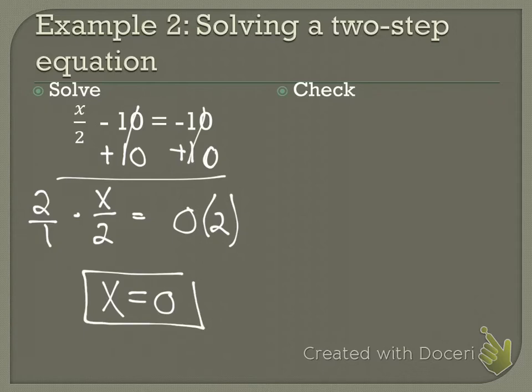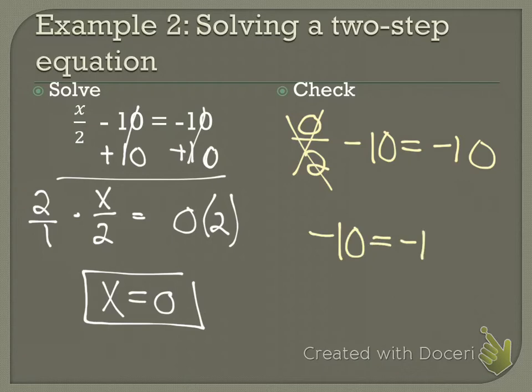When I plug it back in, 0 divided by 2 minus 10 equals negative 10. That cancels, so negative 10 equals negative 10, it checks out. You might have one that's a little tricky like that on your homework. Follow the process. If the answer is 0, it's 0. Now the next one actually has an answer.